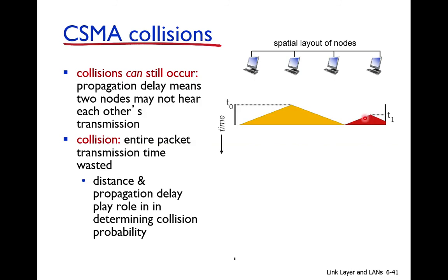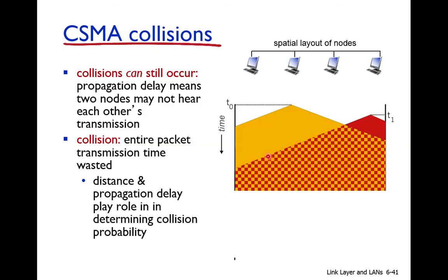This second node also starts transmission. The signal from the first node moves in one direction and the signal from the second node moves in the other direction. They meet somewhere in the middle and collide. When they collide, the signals interfere with each other. Assuming destructive interference, both signals are lost — both data packets are lost.